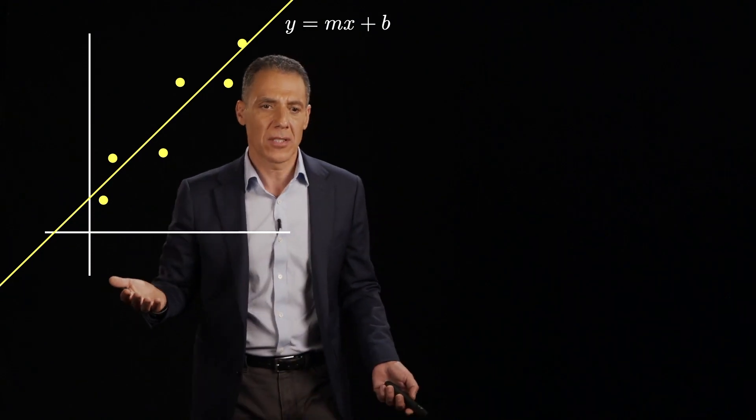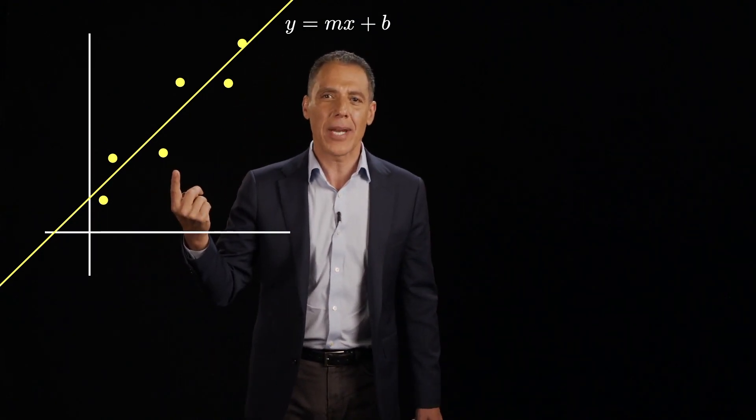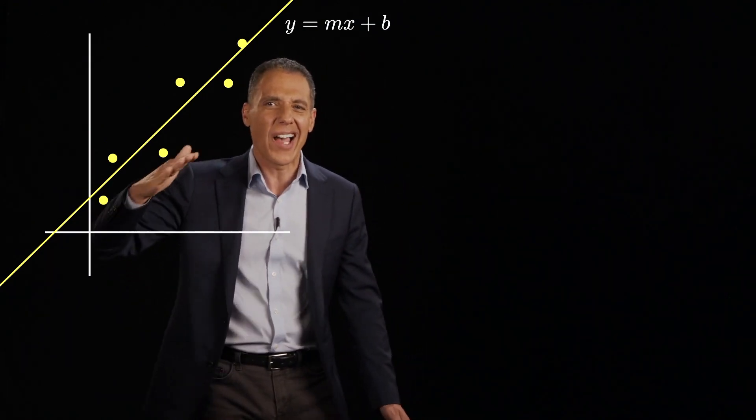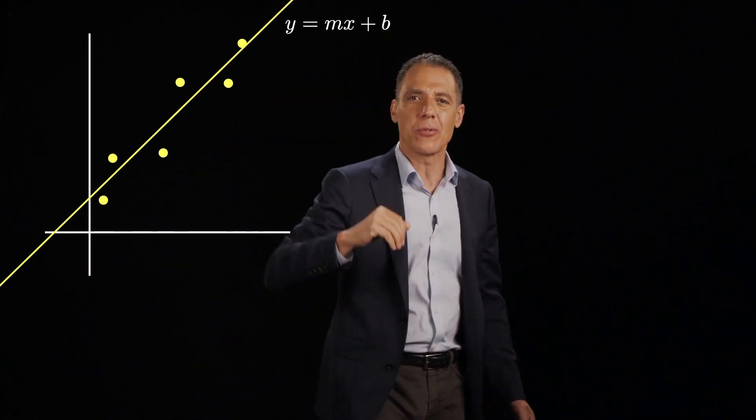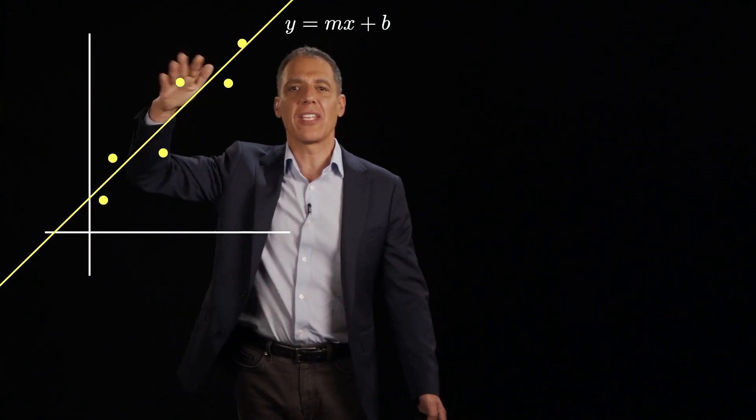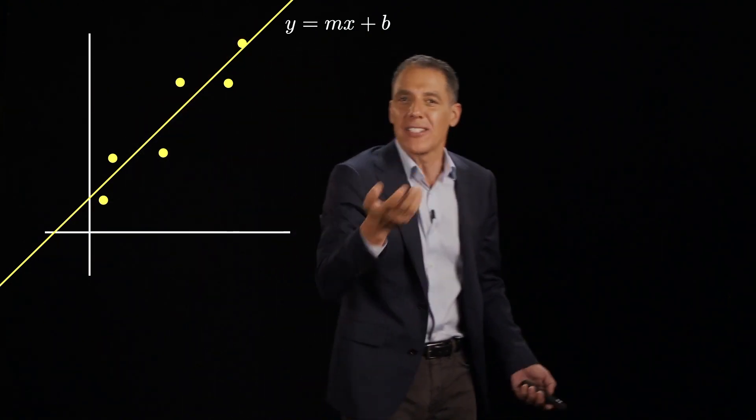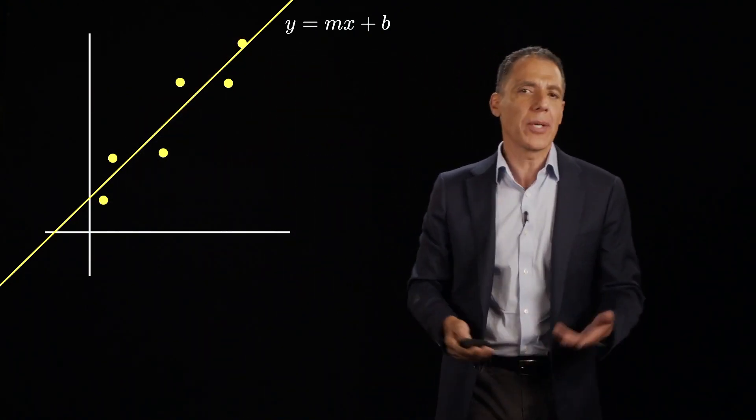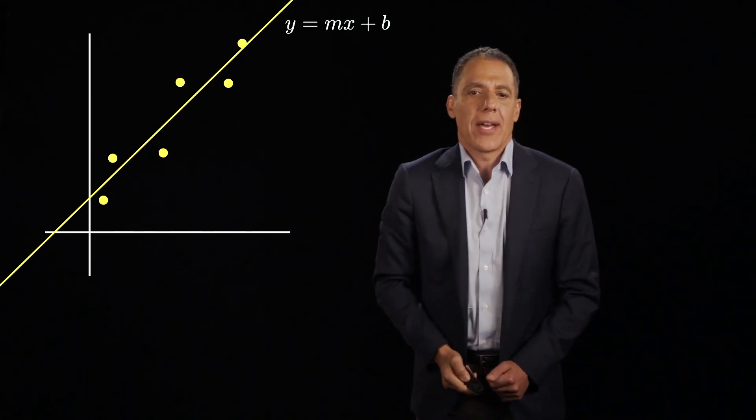Intuitively, what do we want? We want something like what I drew here. We sort of want a line that sort of goes through those data points, minimizing essentially the distance to all the points so that nothing is too far away from it. That's sort of our intuition. And that's what we're going to do, but we're going to quantify that now.